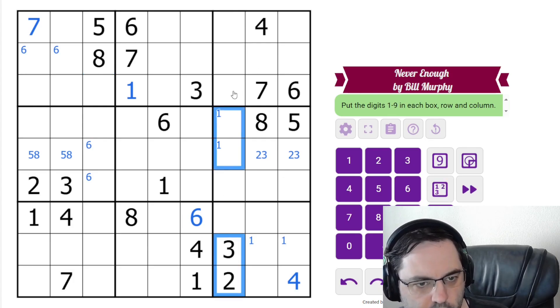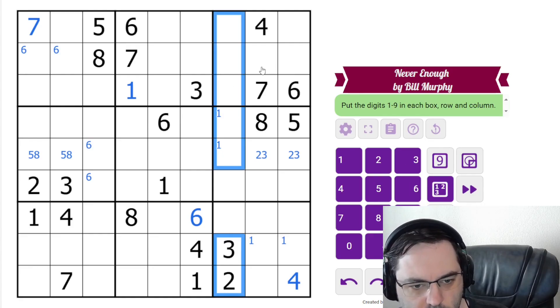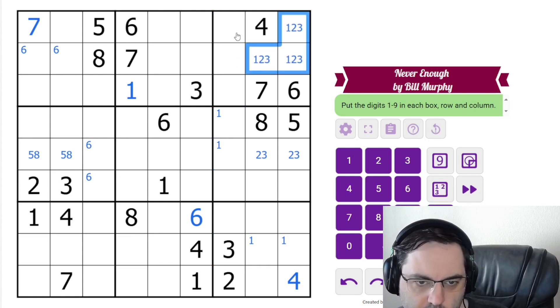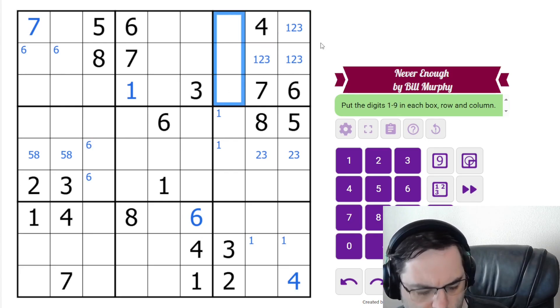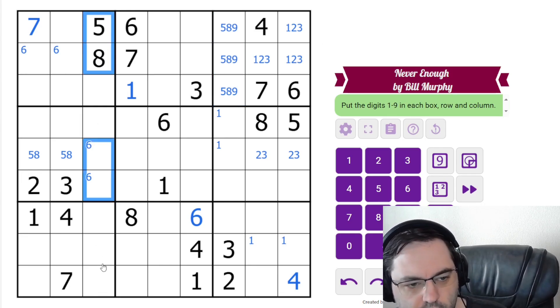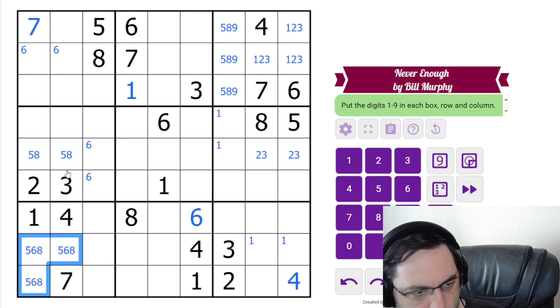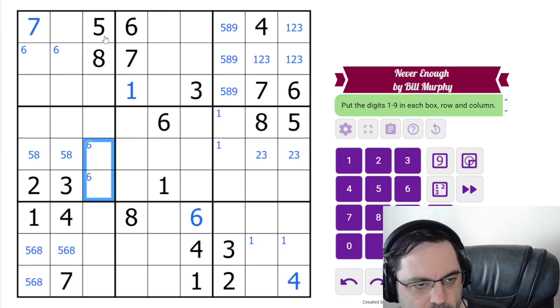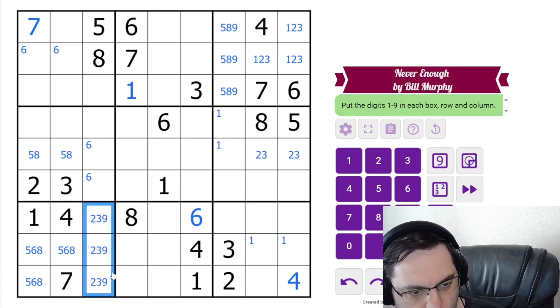6 has to go in one of these cells now. And probably 1 here. Yep. What else? Okay, this is kind of a weird thing. But now 1, 2, and 3 can't go in any of these cells.